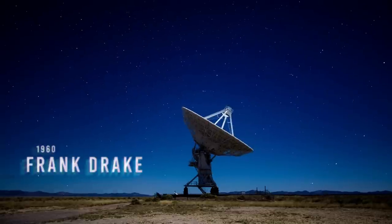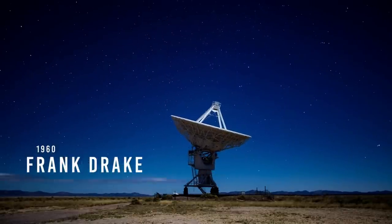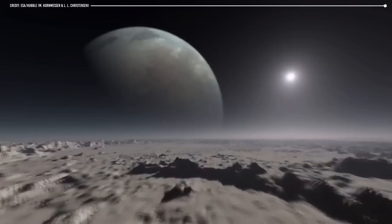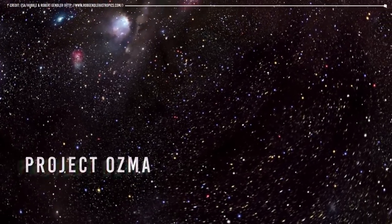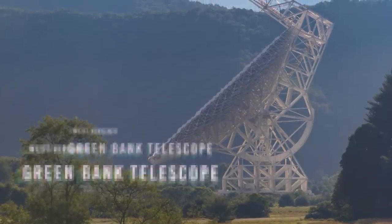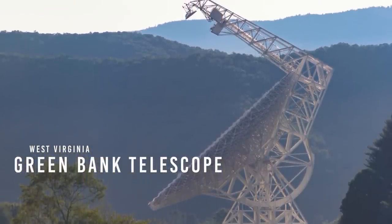In 1960, astronomer Frank Drake used the newly developed technique of radio astronomy to search for signals from intelligent life beyond Earth. The project, known as Project OZMA, was conducted using the Green Bank Telescope in West Virginia, and one of the targets was Barnard's star.